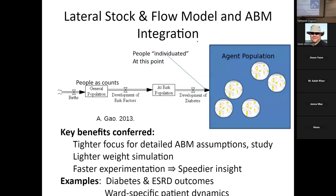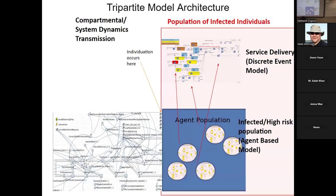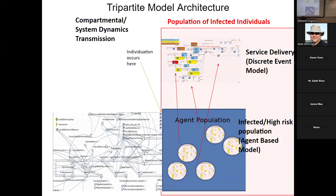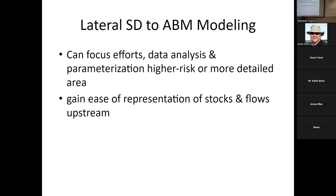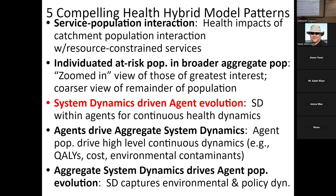This is recommended by economies and elegance. One model used it, and here's another — agent populations with DES. This is actually a tripartite model: it has DES for service delivery, an agent population, and an upstream aggregate component. It doesn't look pretty, but it was pulled together in midnight sessions early in the pandemic for decision-making.